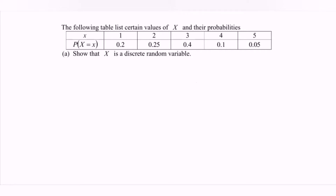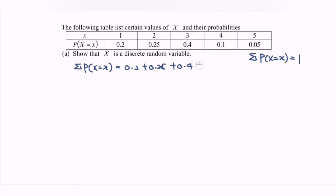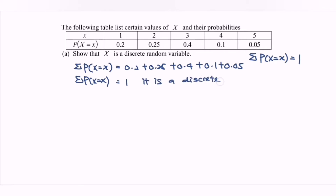Part A asks us to show that X is a discrete random variable. To show this, it must fulfill the condition where the summation of all probabilities is equal to 1. By referring to the table, the summation is 0.2 plus 0.25 plus 0.4 plus 0.1 plus 0.05. With the help of a calculator, this is equal to 1. So the summation of the probabilities equals 1, confirming it is a discrete random variable.